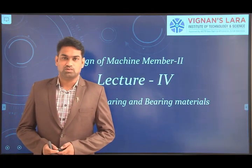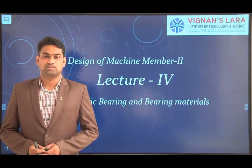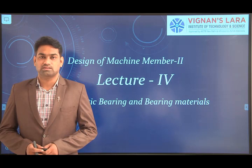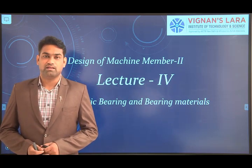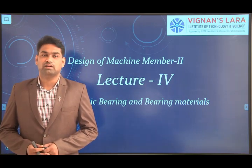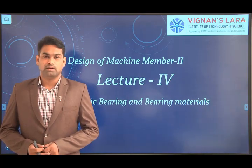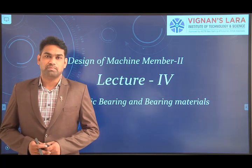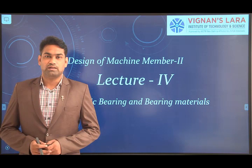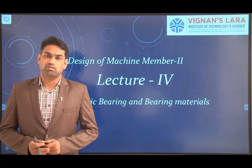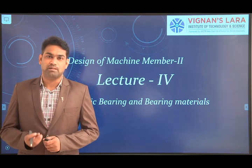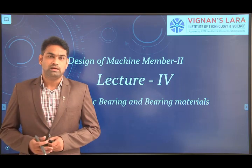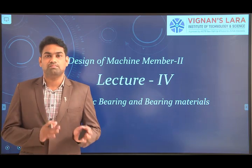Good morning students. In our previous sessions we discussed introduction to bearings and classification of bearings, as well as the various types of sliding contact bearings, along with lubrication and modes of lubrication. In order to obtain a thick film lubrication we have two different methods — the first one is hydrodynamic lubrication, where the thick film can be obtained by the rotation of the journal with no external means, forming a thick film between the bearing surface and the machine component surface.